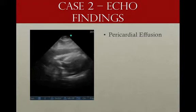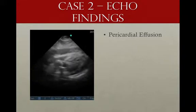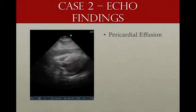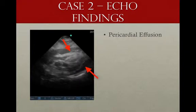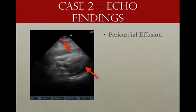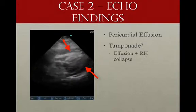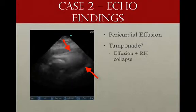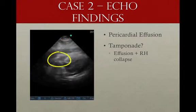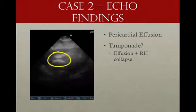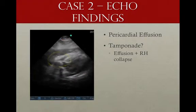There is definitely a pericardial effusion, and we need to determine whether this is the cause of her shock. In order for an effusion to cause shock, there must be signs of tamponade. We see the effusion, so now we need to look at the right heart. Looking at the right ventricle, there's definitely right ventricular collapse.